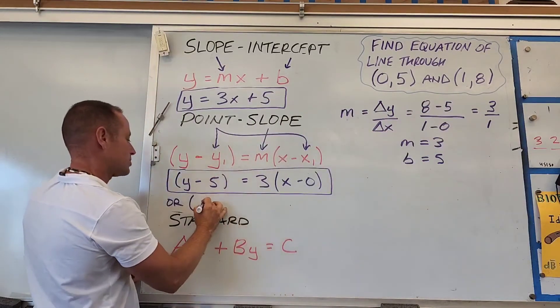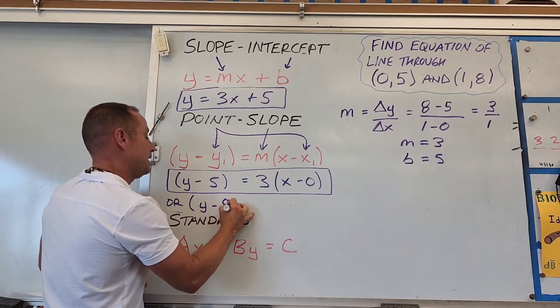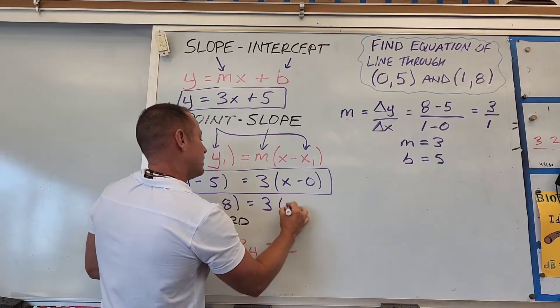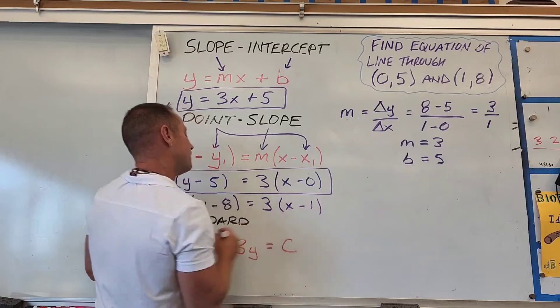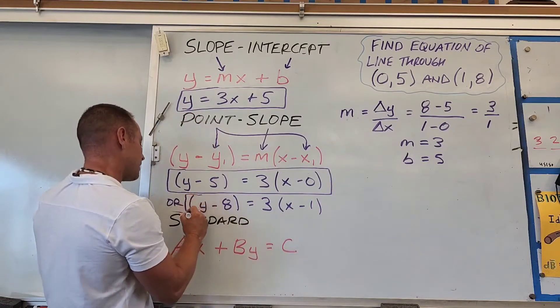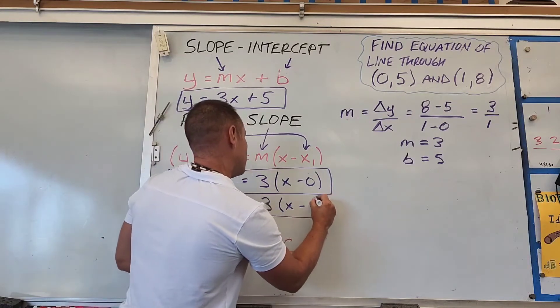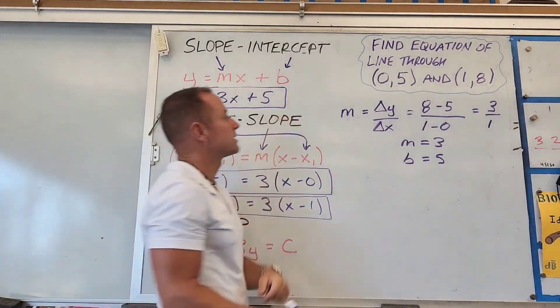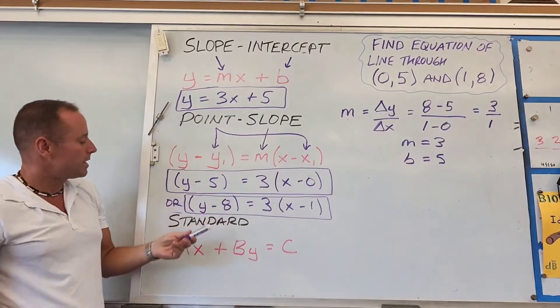we could write this as y minus 8 equals 3 times (x minus 1). Both of these are correct equations for the line through those two points. The final form